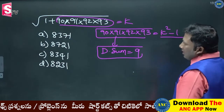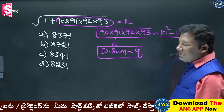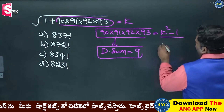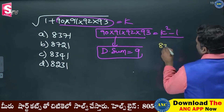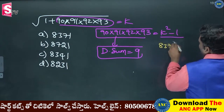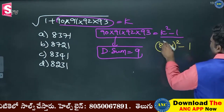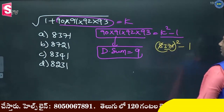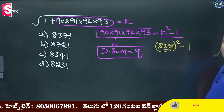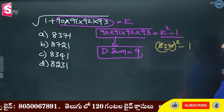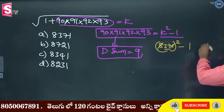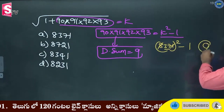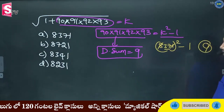Square the answer, subtract 1, and you need digital sum 9. 8371 whole square minus 1: 3 plus 7 is 10, 10 gives 1, 1 minus 1 is 0, which gives 9. First one: 9. Correct.